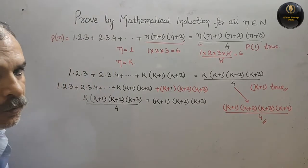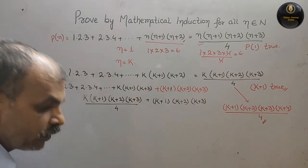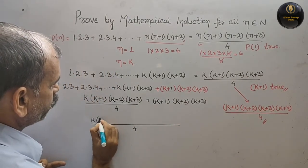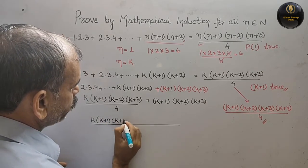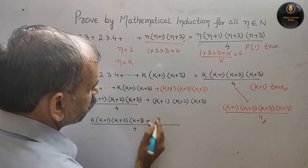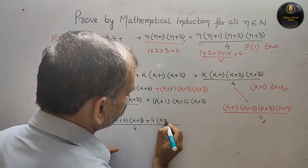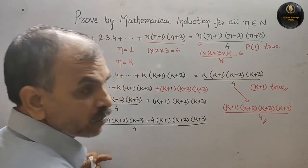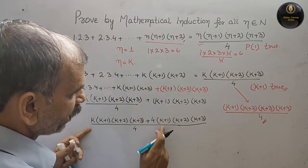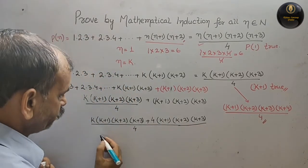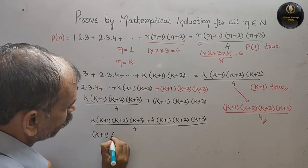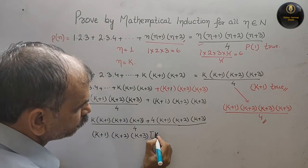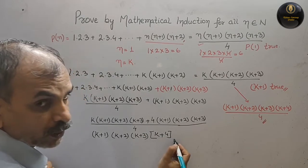Taking LCM as 4, the numerator is k(k+1)(k+2)(k+3) + 4(k+1)(k+2)(k+3). We can see that (k+1), (k+2), and (k+3) are common to both terms. Factoring them out gives (k+1)(k+2)(k+3)(k + 4) / 4.